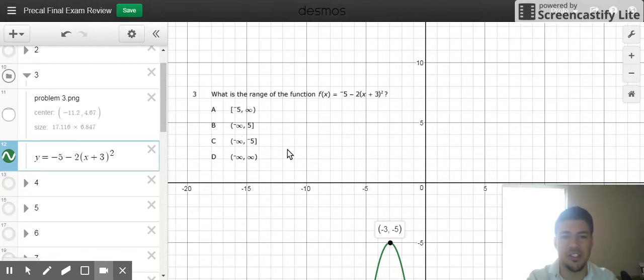But the correct answer is C, again, because the lowest y value is negative infinity. The largest y value is negative 5. It should have been a simple problem that you can just put into y equals, and you'd have it.